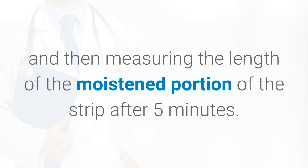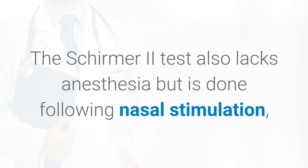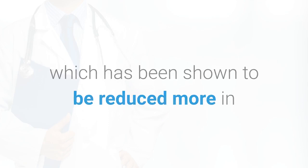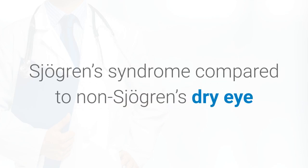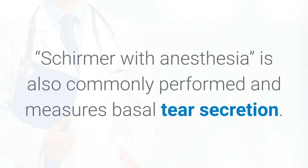The length of the moistened portion of the strip is measured after five minutes. The Schirmer 1 test is performed without anesthesia and thus measures reflex tearing. The Schirmer 2 test also lacks anesthesia but is done following nasal stimulation, which has been shown to be reduced more in Sjogren's syndrome compared to non-Sjogren's dry eye. Schirmer with anesthesia is also commonly performed and measures basal tear secretion.